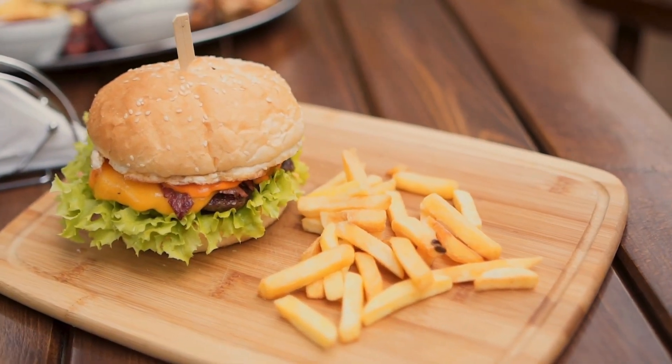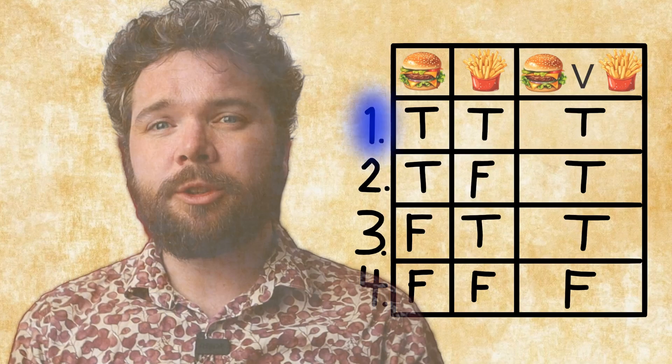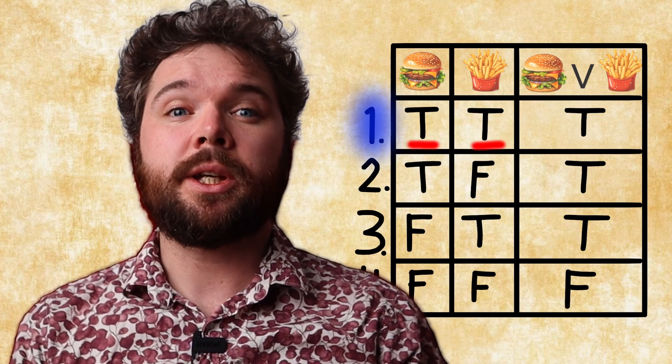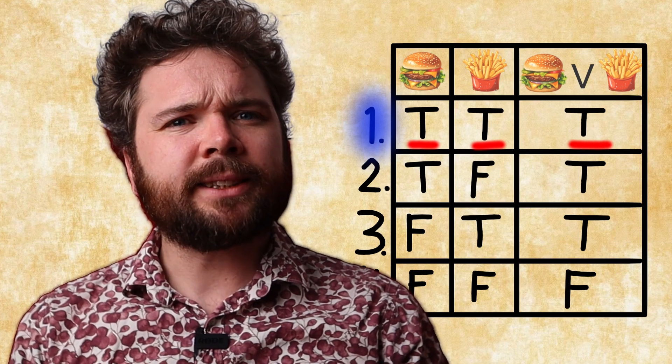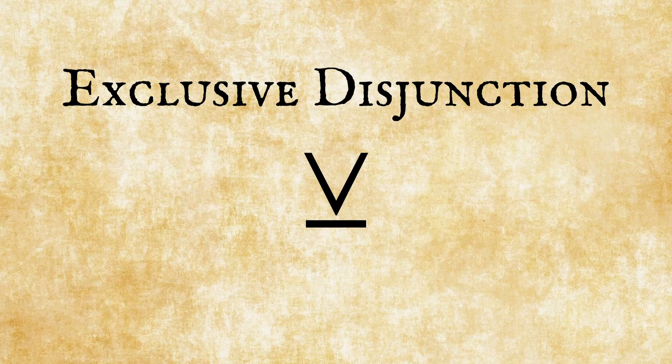Let's look at the truth table. Let's say that A means 'I will give you a hamburger' and B means 'I will give you fries.' In the first scenario both are true, and the disjunction is true. If I said I will give you a hamburger or fries and then gave you both, did I lie? Some might say yes, but in standard logic we have an inclusive disjunction rule for good reasons I'll discuss in a future episode. But there is a logical sign for an exclusive disjunction.